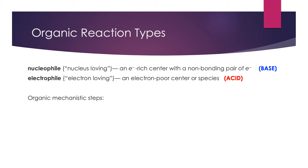A nucleophile, which literally means nucleus-loving, is an electron-rich center on a molecule or ion that has a non-bonding pair of electrons. In some sense, you can think of this as being like a base. Ammonia is a great nucleophile because there is a non-bonding pair of electrons on the nitrogen, and that non-bonding pair represents an electron-rich center that can undergo nucleophile-type interactions with other species.